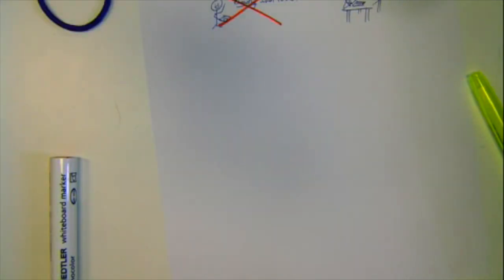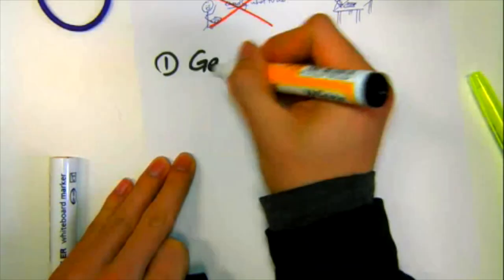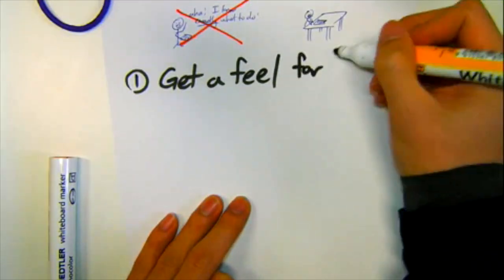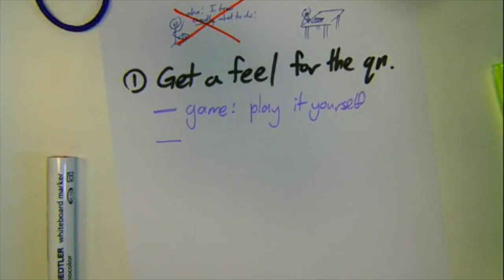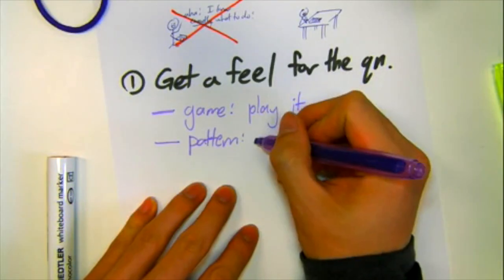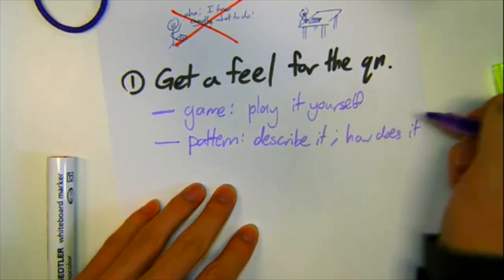So here, in more specific terms, is the first step of every problem. Get a feel for the question. If it's a game, play it for yourself, play against yourself. If it's a pattern, try to describe it first. How do you get from one number or picture to the next?